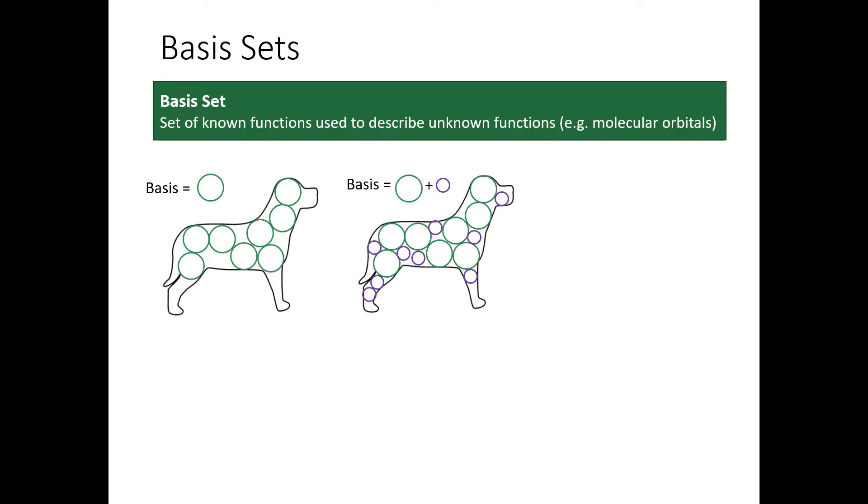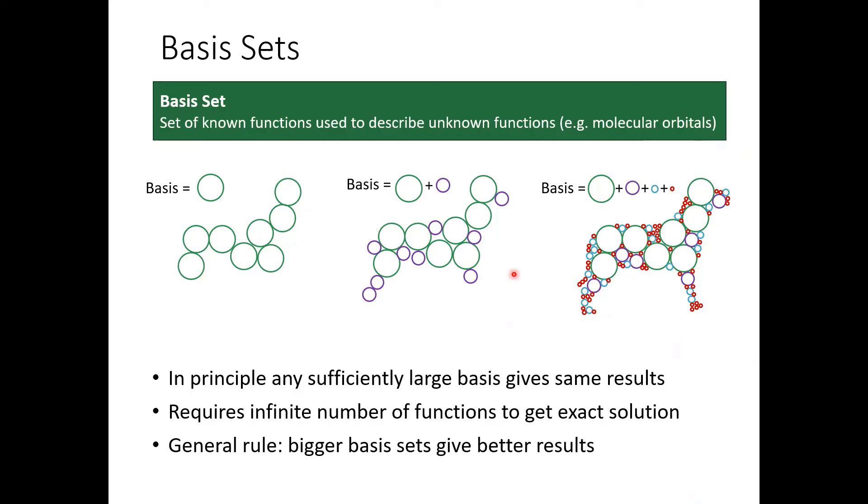That's not going to be a super good description of the dog, but if I add more circles of different sizes, I can get a better description and an even better description if I add more. And so we can see that when we take away that outline, only this last one actually gives us that shape of the dog back. But the idea here is that we're using these known functions, which are the circles, to approximate that unknown function. In principle, I could have used any shape. I didn't need to pick circles. I could have done it with squares or diamonds or pentagons. So in principle, any large enough basis is going to give you the same results.